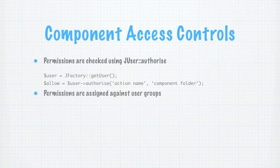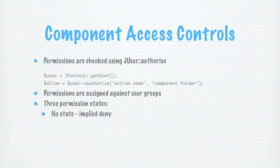It's important to realise that permissions are assigned against user groups, not individual users, so the access control checks will take into account all of the groups that a user belongs to. There are three permission states. The first is actually no state at all, which Joomla interprets as an implied deny — by default, Joomla doesn't allow you to do anything. The next state is allow, which explicitly allows you to perform an action. The last state is deny, which explicitly prevents you from performing a given action. The important thing to remember is that allow can override an implied deny, but deny will always override allow — the explicit deny always wins, even if you have an explicit allow set through another user group.